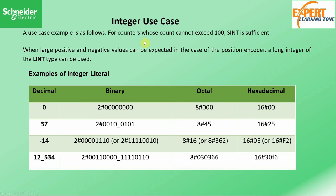Use cases for integers: if you have a count that cannot exceed 100, a short integer (SINT) is sufficient. When large positive and negative numbers are expected — such as with a position encoder — a long integer (LINT) can be used. The table below demonstrates how you can represent an integer: in decimal, binary, octal, or hexadecimal. For example, 37 in decimal is represented as binary 37, octal 37, and hexadecimal 37 in their respective formats.